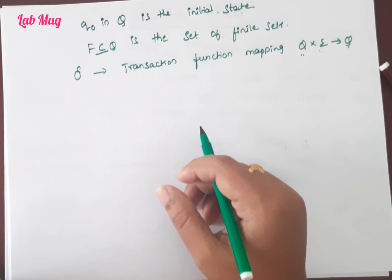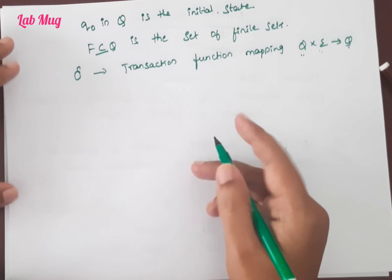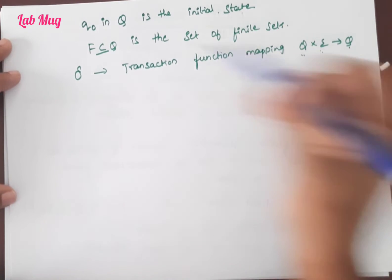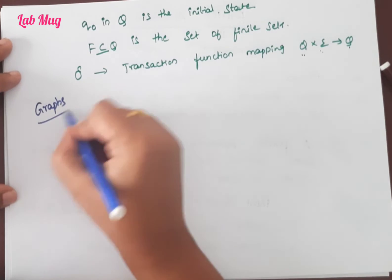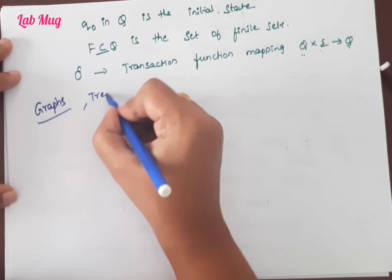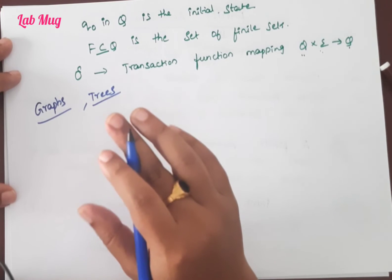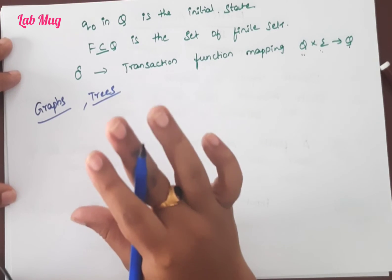Before that, first of all, how do we represent finite sets? We'll see how to represent them. So in total, we have graphs as one representation and trees as one representation. So we have these two representations: graphs and trees.